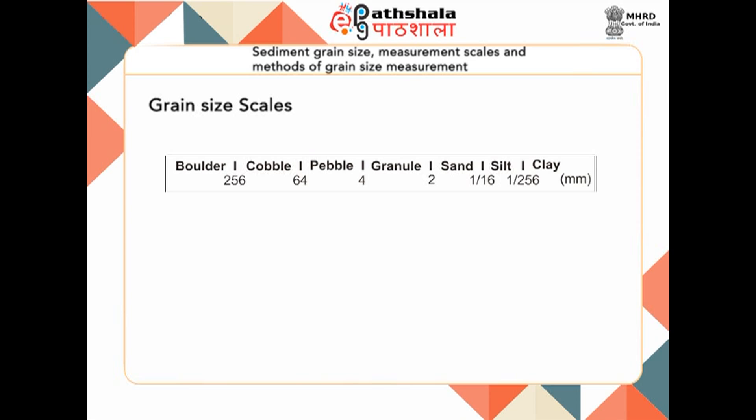This figure demonstrates how the Udden-Wentworth scale size is transformed into the phi scale. All the size ranges in the Udden-Wentworth scale can be expressed as a power of 2 — for example, 2 to the power 8, 2 to the power 6. The phi scale is defined as the negative logarithm of the millimeter scale diameter with base 2. If we transform it with log base 2, it clearly transforms into a positive round integer, which is the aim of the phi scale.